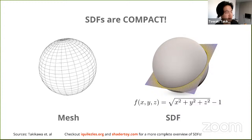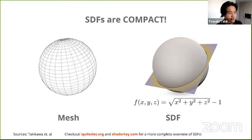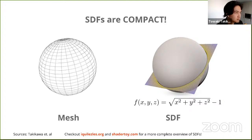The nice thing about signed distance functions is that they are very compact. For a simple shape like a sphere, representing it as a mesh requires many vertices and triangles, but as a signed distance function it's a very simple math function you probably learned in high school geometry. The bad news is that most 3D data doesn't come as these math functions — you actually have a mesh for most 3D data available in the world right now, so it's unclear what the function should be.